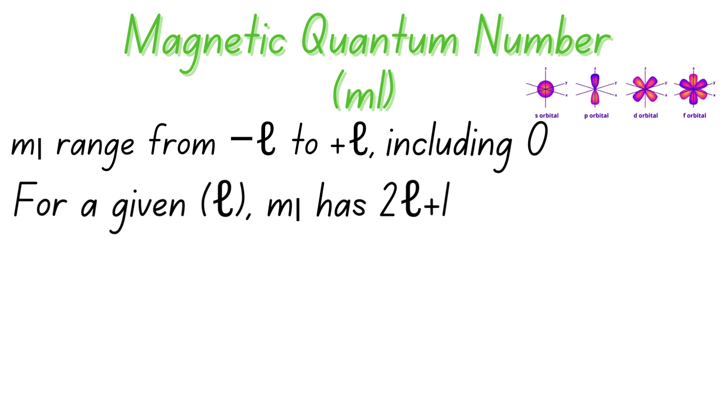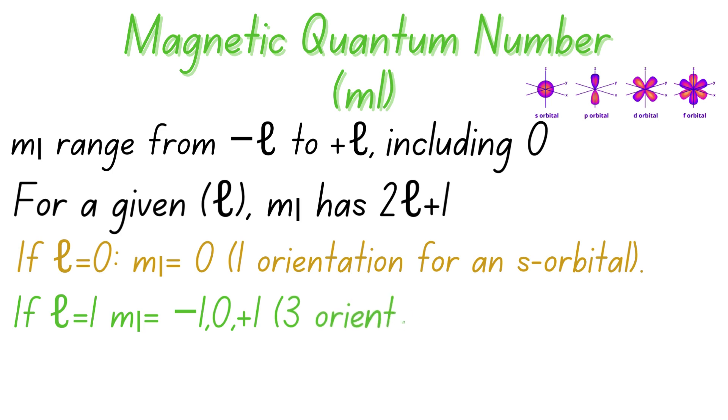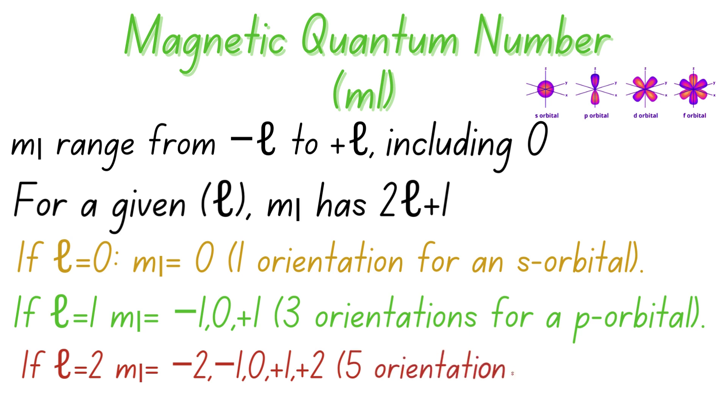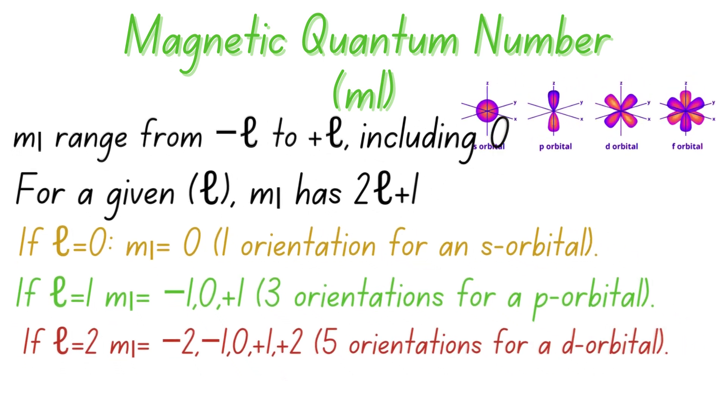For example, if l is equal to zero, ml will be equal to zero. That means we have one orientation for an s orbital. If l is equal to one, ml will be equal to minus one, zero, and plus one. So that is three orientations for a p orbital. If l is equal to two, ml will be equal to minus two, minus one, zero, plus one, and plus two. So that is five orientations of a d orbital.